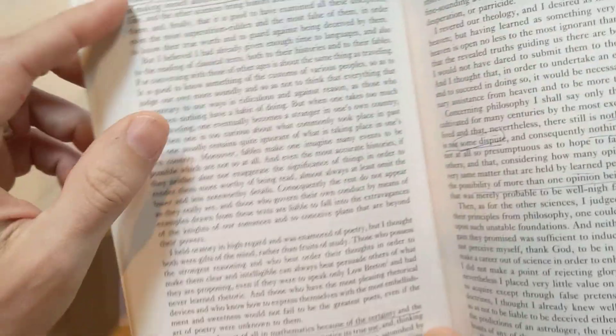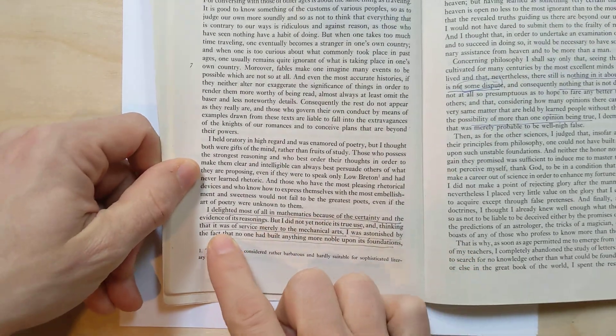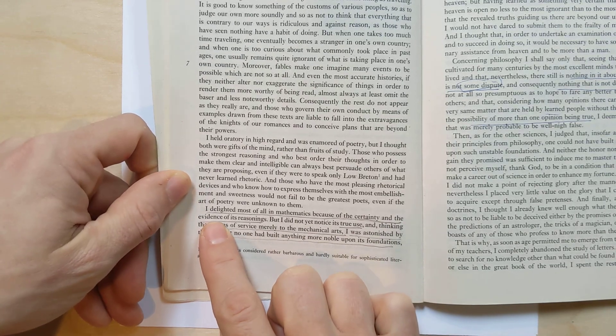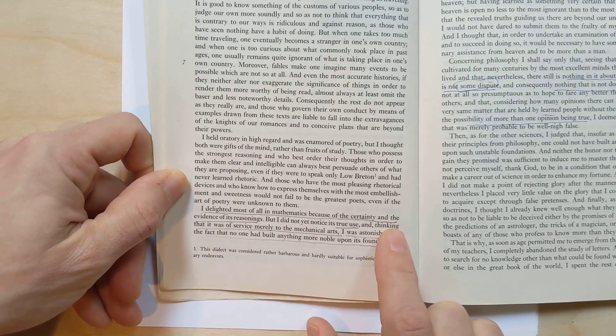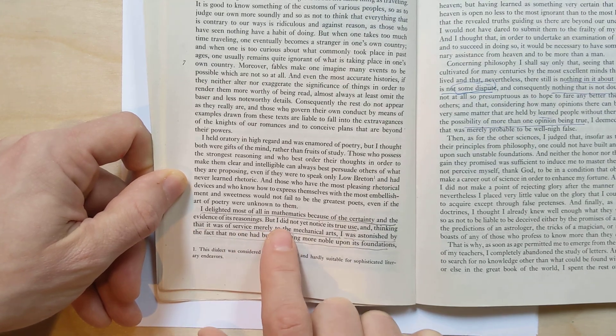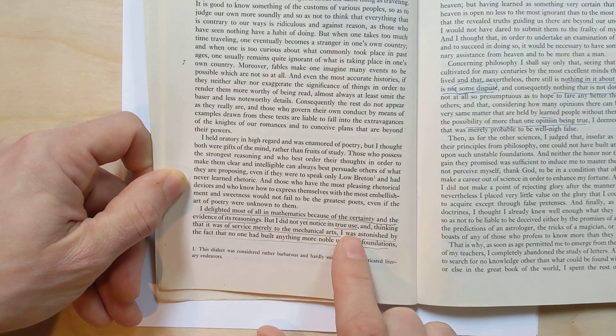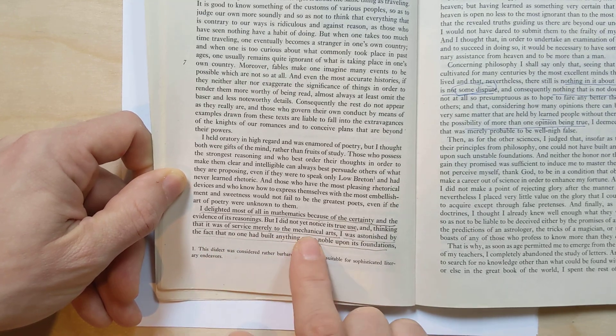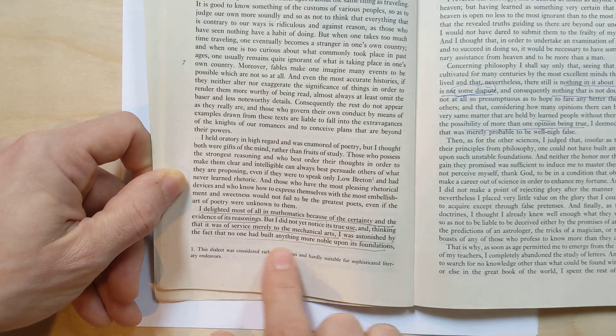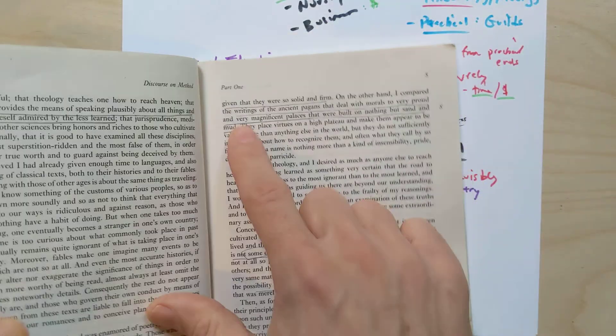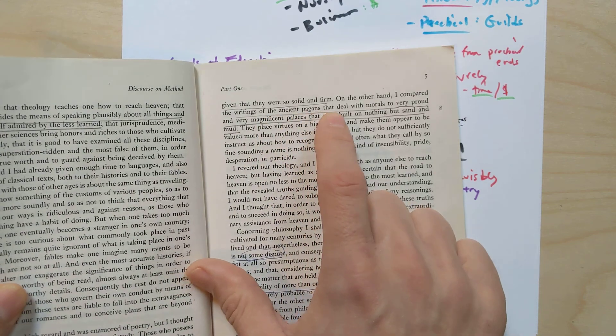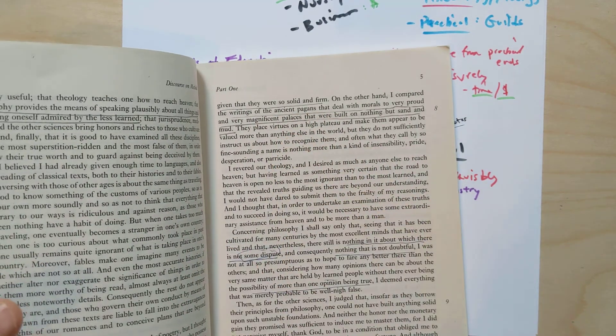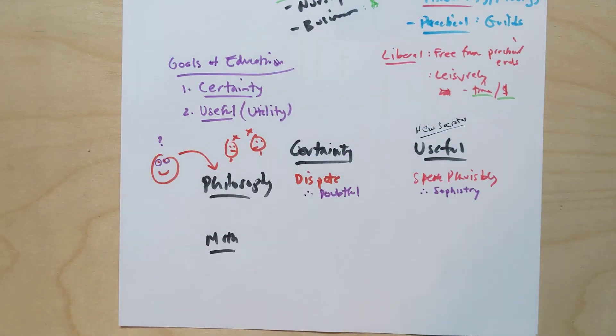Well, on page four, so where's the very bottom, still in part one, Descartes here says, I delighted most of all in mathematics because of the certainty and the evidence of its reasonings. But I did not yet notice its true use and thinking that it was of service merely to the mechanical arts. I was astonished by the fact that no one had built anything more noble upon its foundations, given that they were so solid and firm. So let's, there's two things that happened right there in that one long sentence, Descartes describes both the certainty and the usefulness of mathematics.